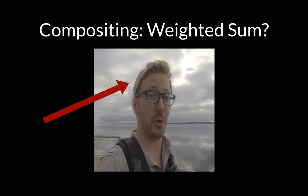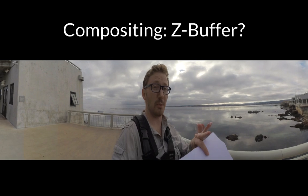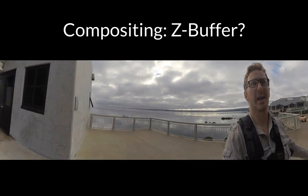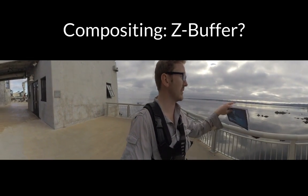Simply summing all the fragments that land into each pixel ignores occlusion, resulting in ghosting artifacts around the boundaries of foreground objects. Using z-buffering addresses occlusion, but it also produces aliased and temporally incoherent results and does not blend smoothly between input cameras.